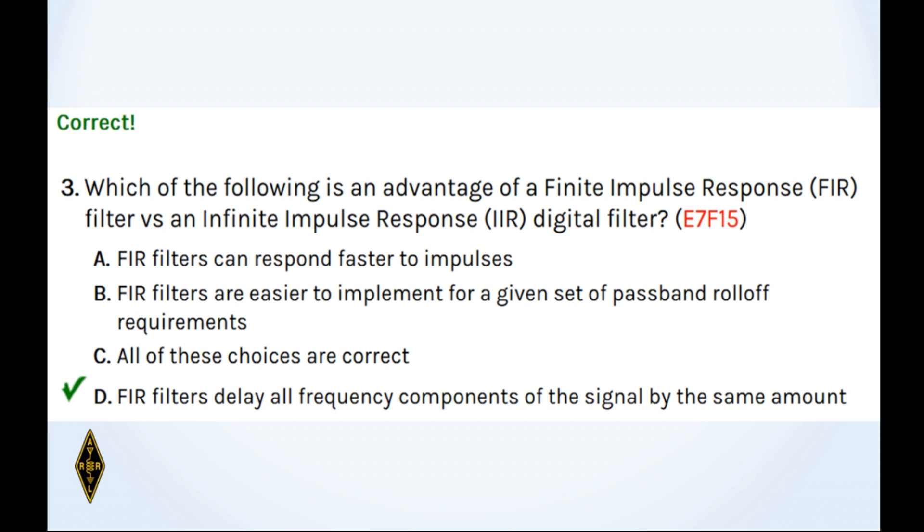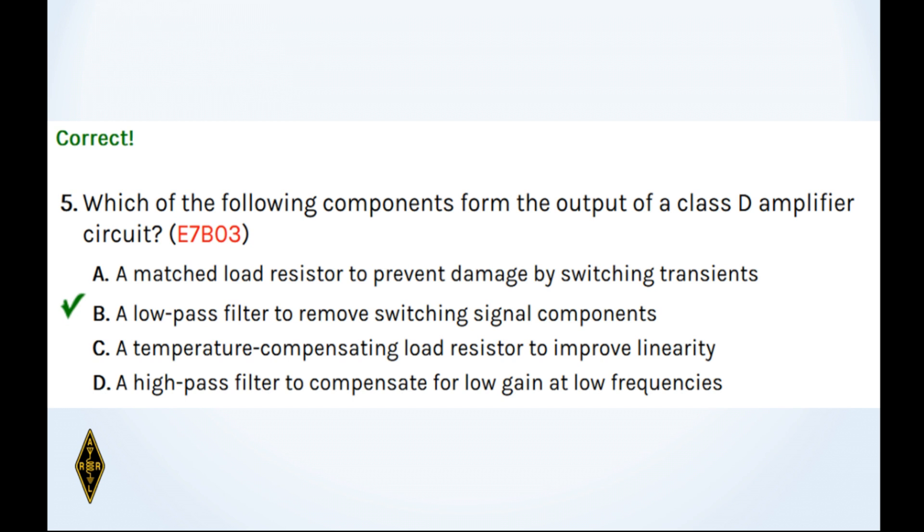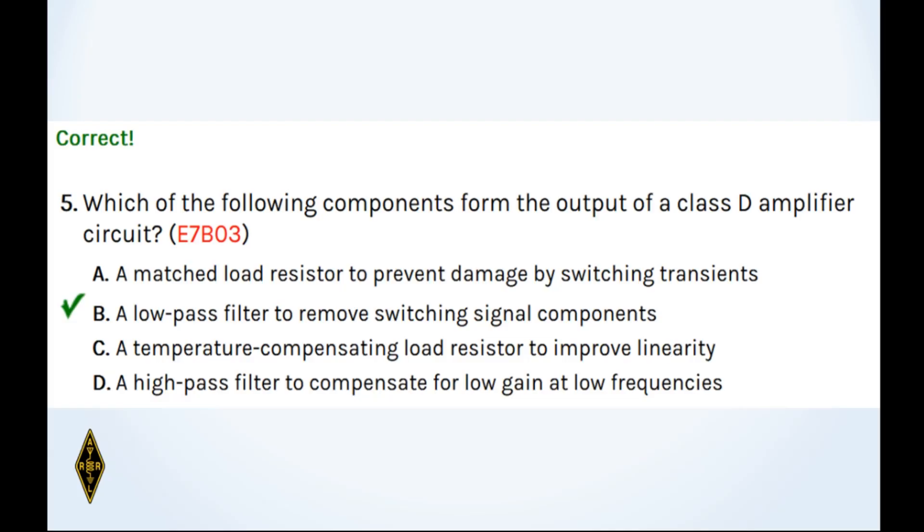4. How can the output voltage of a multiple turn receiving loop antenna be increased? C. By increasing either the number of turns of wire or the area of the loop structure or both. 4C. 5. Which of the following components form the output of a class D amplifier circuit? We talked about amplifiers. Class A is a linear amplifier. Class B 180 degrees. Class AB is somewhere in between. Class C is only a little bit of the cycle. And then class D is a square wave output. It's a switching output. And so you need a low-pass filter to remove the switching signal components. So 5B.